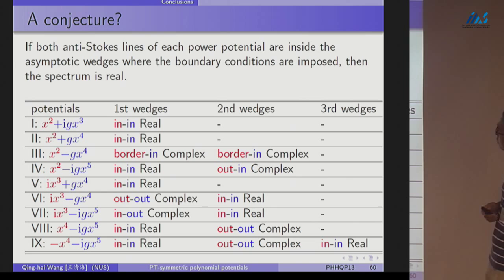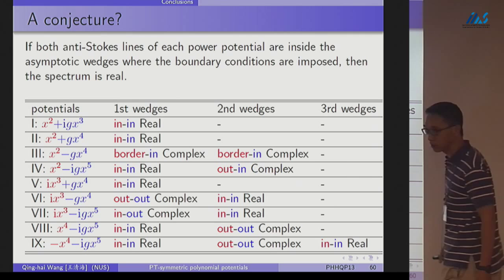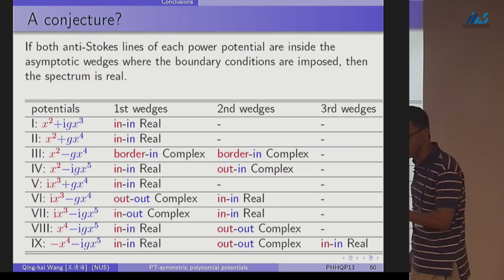If both anti-Stokes lines, the center of Stokes lines, in each pair inside asymptotic wedge, then the spectrum is real. If it's one outside or one on boundary, it will be PT symmetry breaking. I do not know whether this is a necessary or even sufficient condition. That seems to be. This is a really interesting result.